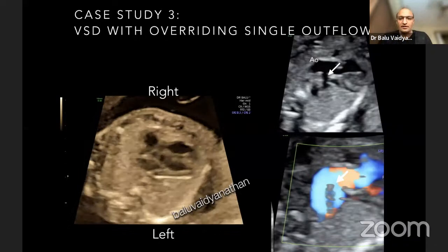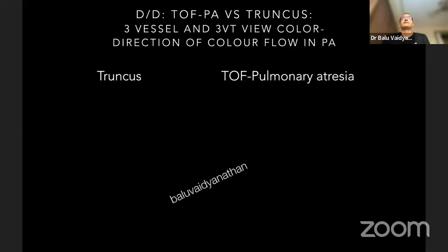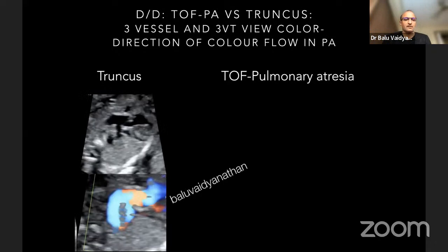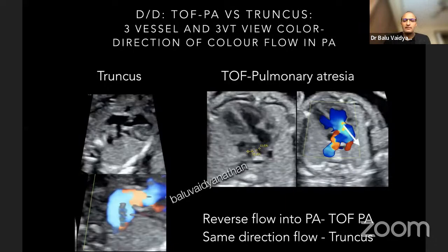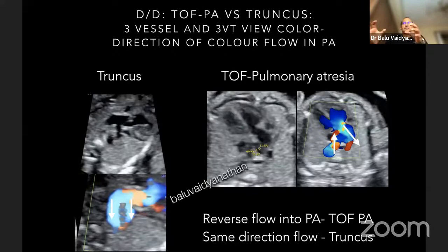There are two lesions where you have a VSD with an overriding vessel and a single outflow: one is a common arterial trunk and the second is TOF with pulmonary atresia. These two lesions need to be separated. You need to look at the color flow and see how the flow into the pulmonary artery is. In TOF with pulmonary atresia, there will be forward flow into the aorta but retrograde flow into the pulmonary artery, because the pulmonary artery is fed through the ductus arteriosus. However, in the common arterial trunk, there will be forward flow into the aorta and also forward flow into the pulmonary artery, as both arise from the single trunk. In common arterial trunk, the direction of flow of PA and aorta are the same.